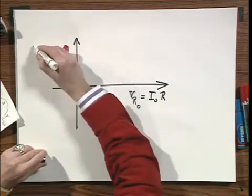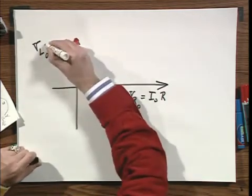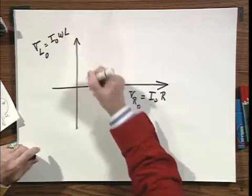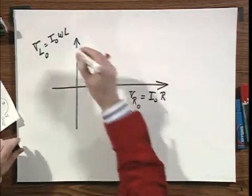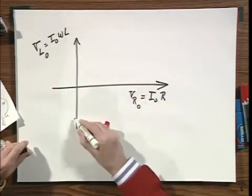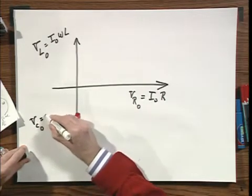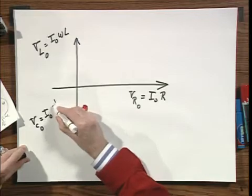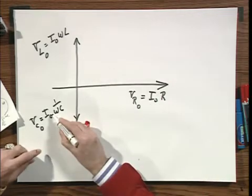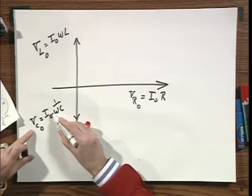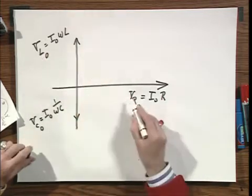It is true that the voltmeter, the maximum amplitude of the voltmeter over the self-inductance will read I zero times omega L, but not at the same time as this one. It is true that the voltmeter over the capacitance, the amplitude, will be I zero times one over omega C, but it will not occur at the same time that this one does it. In fact, it will do it later. It is 90 degrees behind this voltage and this one is 90 degrees behind that voltage.